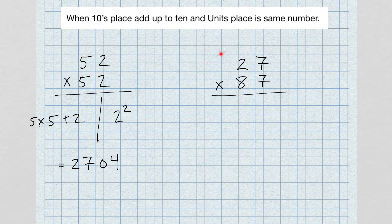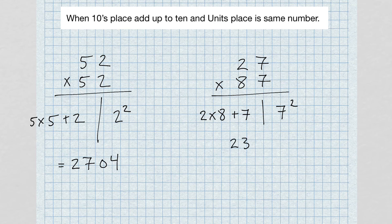Now 27 times 87: left-hand side, two times eight plus seven; right-hand side, seven squared. Two times eight is 16; 16 plus 7 gives us 23. Seven squared is 49. Answer: 2349.